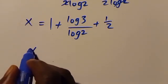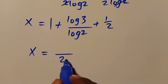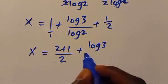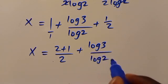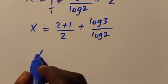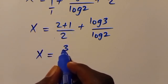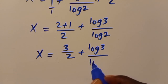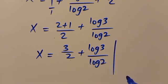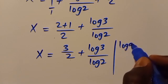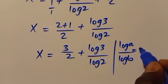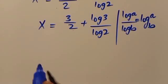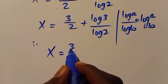Adding 1 and 1/2 using an LCM of 2, we get 2/2 plus 1/2 equals 3/2. Recalling that log a over log b equals log base b of a, we have x equals 3/2 plus log base 2 of 3 as our final answer.